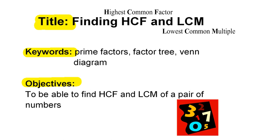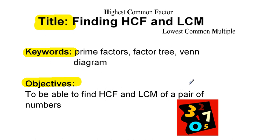The title of this video is finding the HCF or highest common factor and the LCM or lowest common multiple. Key words are prime factors, factor tree, and Venn diagram. The objectives of the lesson are to be able to find the highest common factor and the lowest common multiple for a pair of numbers.